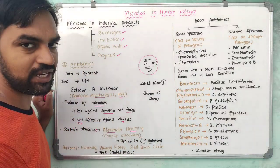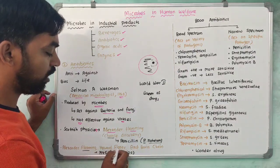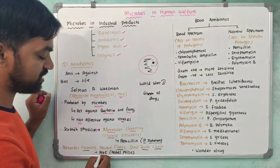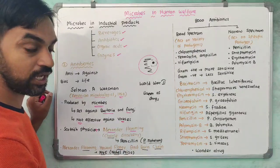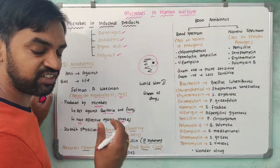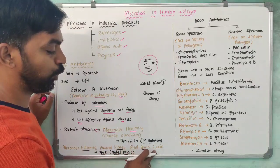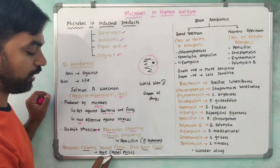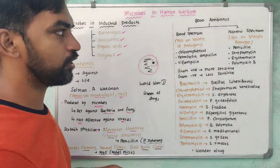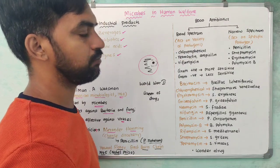Alexander Fleming, Howard Florey, and Ernst Boris Chain received the Nobel Prize in 1945. Fleming discovered penicillin while Florey and Chain developed and perfected its use. About 8000 antibiotics have been discovered and they are classified as broad spectrum and narrow spectrum.